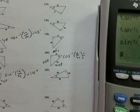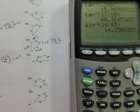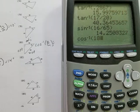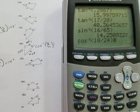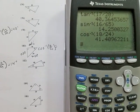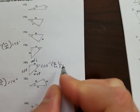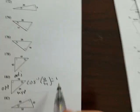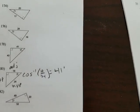So inverse cosine of 18 over 24, that is 41.4, or to the nearest degree, 41 degrees. All right.